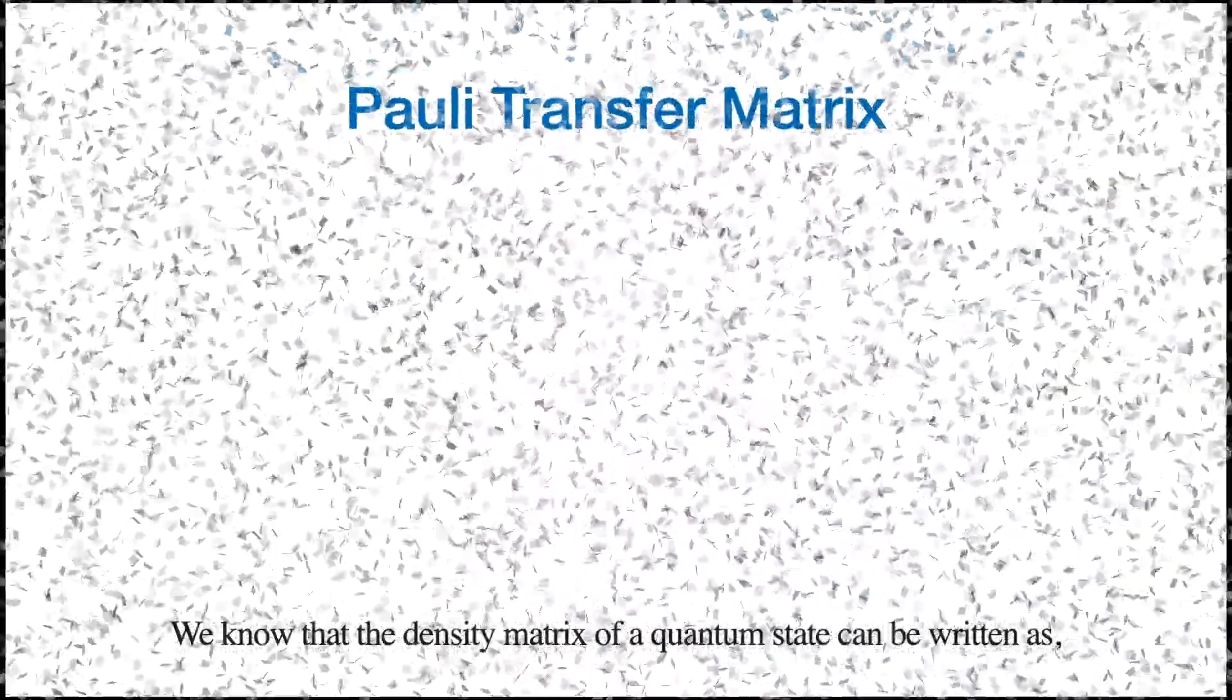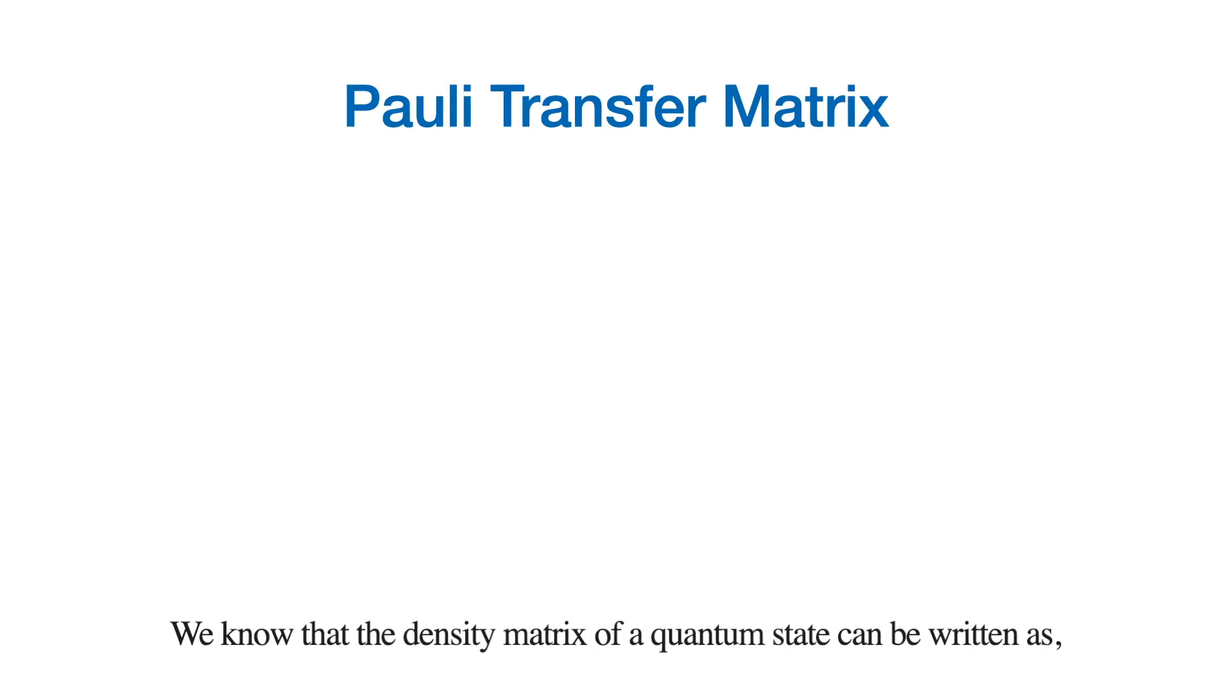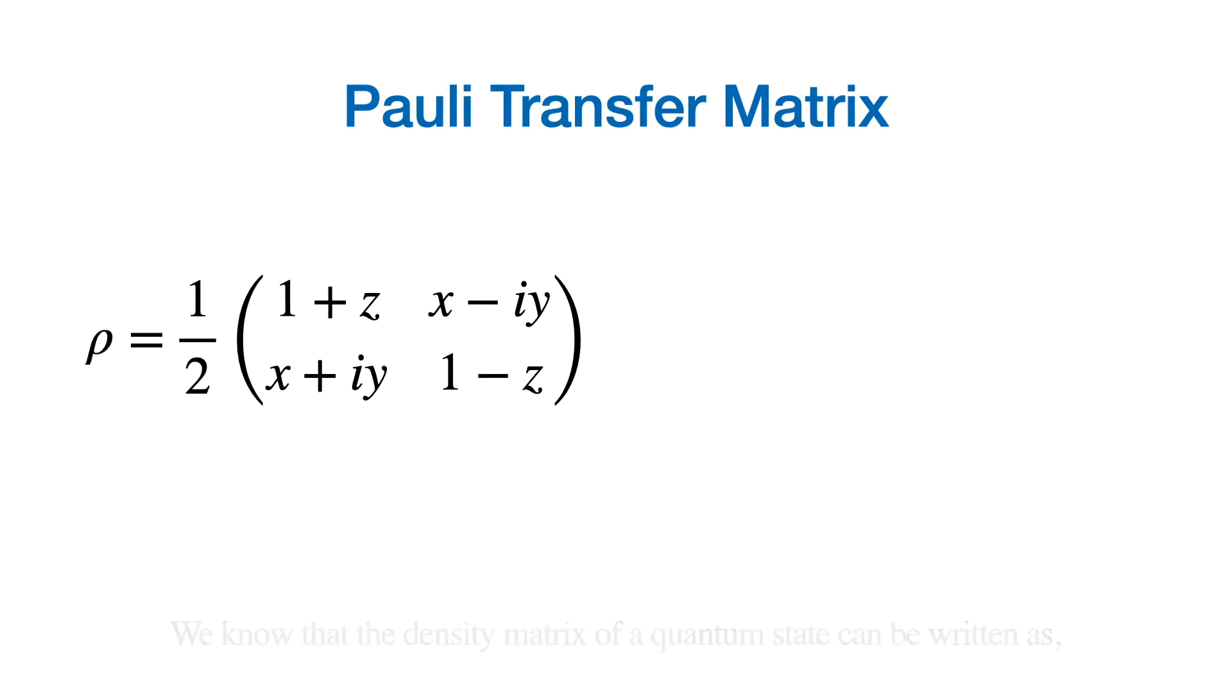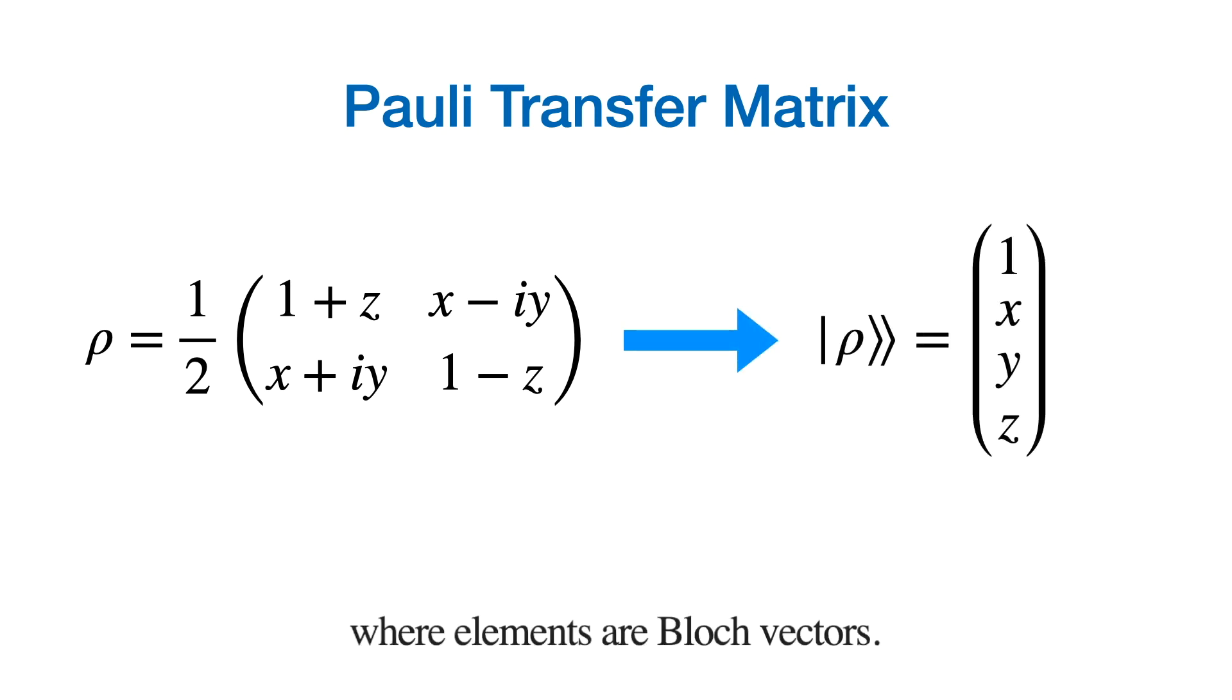We know that the density matrix of a quantum state can be written as this formalism stretches a density matrix into a clean column vector, where elements are Bloch vector.